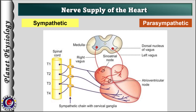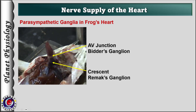In contrast, preganglionic parasympathetic fibers emerge from the medulla as the vagus nerve. These fibers terminate in the parasympathetic ganglia near the cardiac muscles. The postganglionic parasympathetic fibers arising from these ganglia innervate the SA node, AV node and atria, and a very small portion of the ventricular muscles. They release acetylcholine which exerts inhibitory effects on the heart. In case of frog's heart, there are two parasympathetic ganglia: Remax ganglion, located at the junction of sinus venosus and atria, and Beda's ganglion, located at the atrioventricular junction.